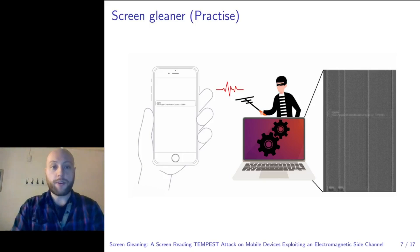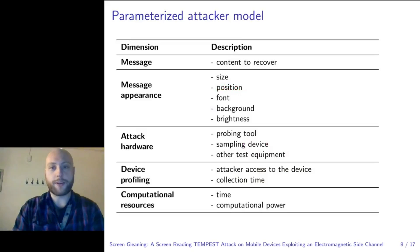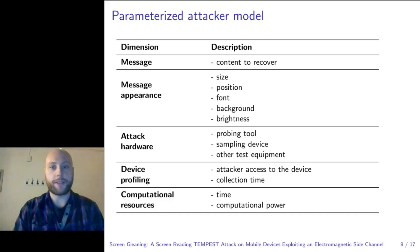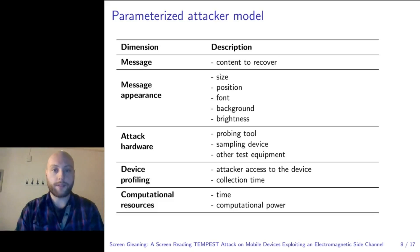To explore the possibilities of screen gleaning attacks, we introduce a parameterized attacker model. In this attacker model, we describe the message and the type of attacker — the message and its appearance, such as the size, position, font, background, and brightness. And for the attacker, we define the hardware, such as the probing tool and sampling device at hand, as well as other test equipment it would require.